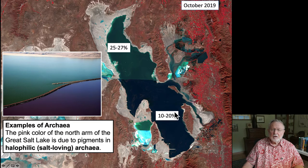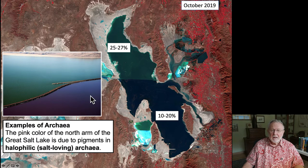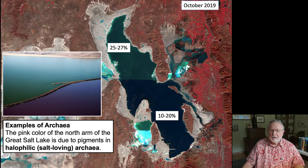In the north arm, the color is different, and you can see that here in a picture looking on either side of the causeway. That difference is caused by the presence of archaea, which are halophytic, or salt-loving.